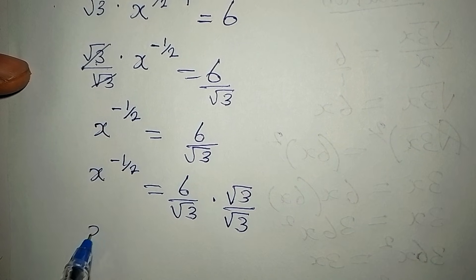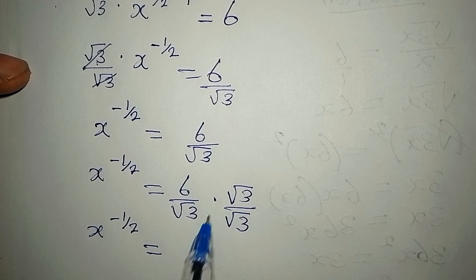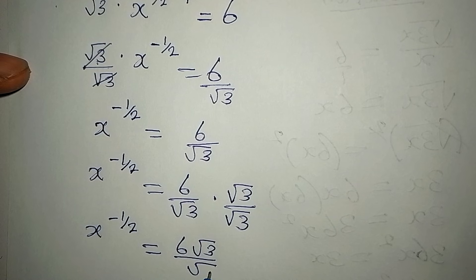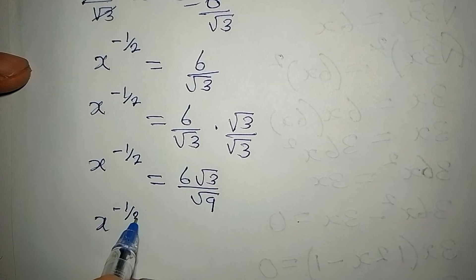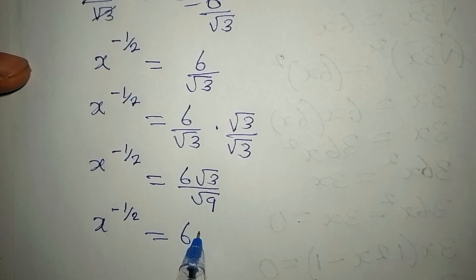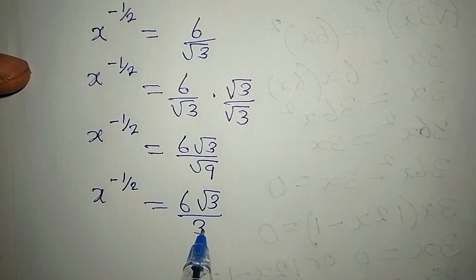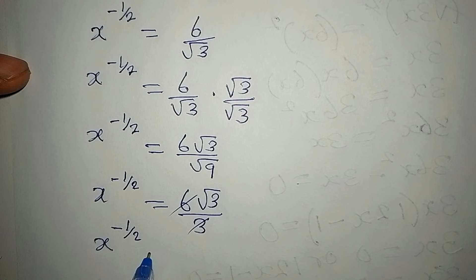So x to the power of negative 1/2 equals 6 multiplied by root 3 over root 3 times root 3. Root 3 times root 3 gives root 9, which is a perfect square equal to 3. So we have 6 root 3 over 3, which simplifies to 2 root 3. Thus x to the power of negative 1/2 equals 2 root 3.